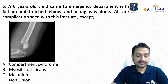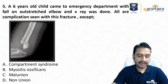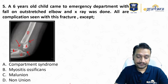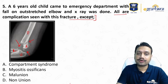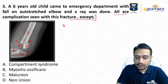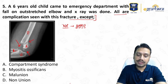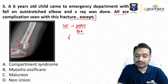Question five: a six-year-old child came to the emergency department with a fall on an outstretched elbow. X-ray shows a supracondylar fracture — you can see the proximal part, distal part, ulna, and radius. All are complications seen with this fracture except — which one is not a complication of supracondylar fracture? Immediate complications include neurovascular injury: the nerves commonly involved are the anterior interosseous nerve, median nerve, radial nerve, and ulnar nerve, in that sequence, plus the brachial artery.